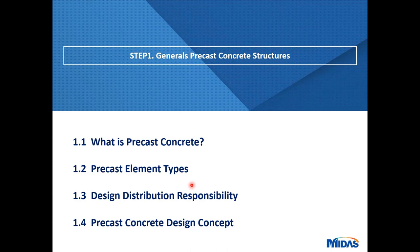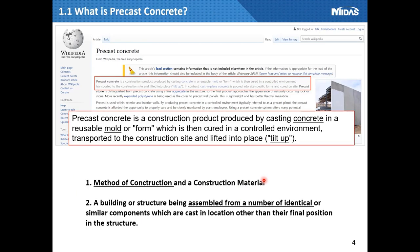Chapter 1 will give general information for those who are not familiar with precast concrete structures. Precast concrete is different from general reinforced concrete, so let's take a look at what types and design concepts it has. If you look up the definition on Wikipedia, to summarize, the essential points are the following two: the method of construction and construction material, and a building or structure being assembled from a number of identical or similar components which are cast in a location other than their final position in the structure.